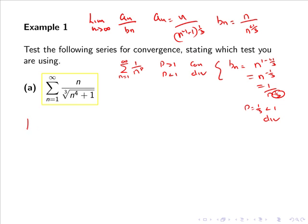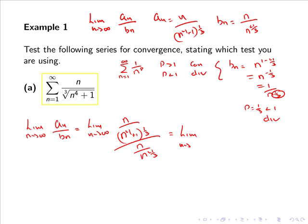Now if we take the limit as n goes to infinity of a_n over b_n, we have the limit as n goes to infinity of n all over (n⁴ + 1)^(1/3) divided by n all over n^(4/3). Or simply the limit as n goes to infinity of n all over (n⁴ + 1)^(1/3) multiplied by n^(4/3) all over n.